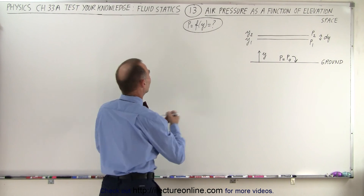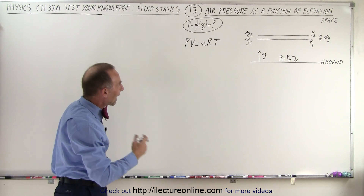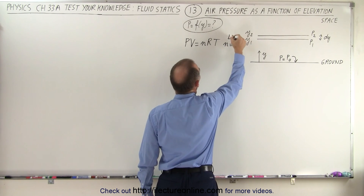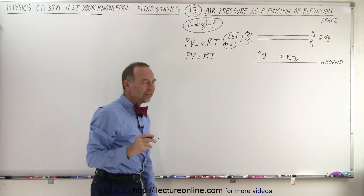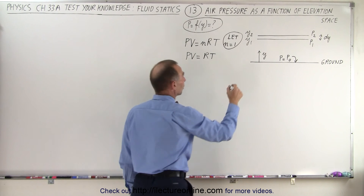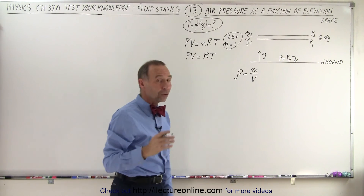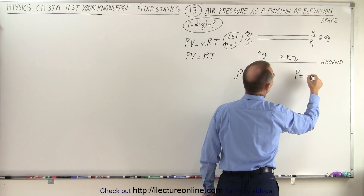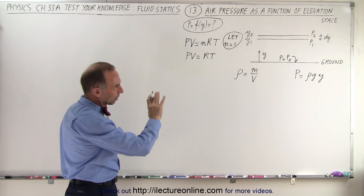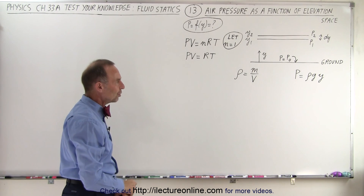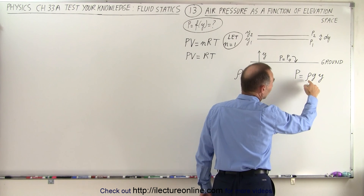We're going to need three equations. The first equation is PV = nRT, and to make things simple we'll let n equal 1 — n is the number of moles — so the equation becomes PV = RT. The second equation is the density equation: density equals mass over volume. The third equation is for pressure: the pressure in the fluid is equal to rho times g times y. We want to find how the pressure changes as a function of y, which will depend upon the density at that particular location.